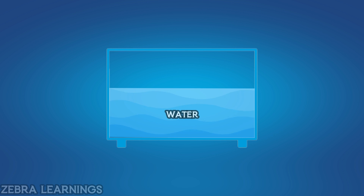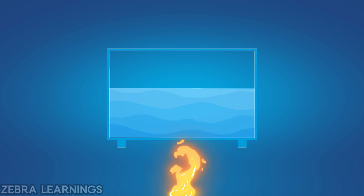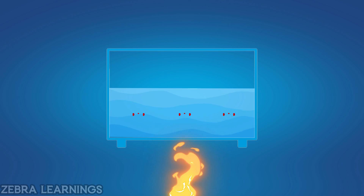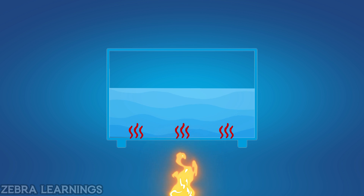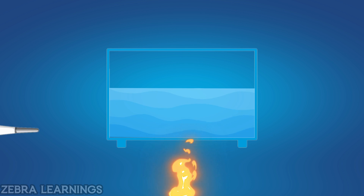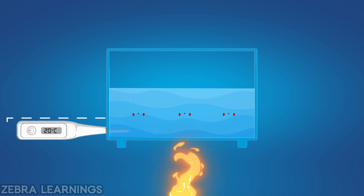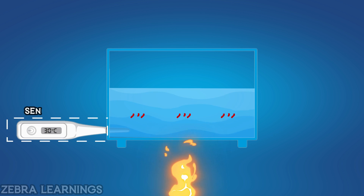We can take water in a completely closed container. Now we can heat this container. The heat will be transferred to the water little by little. The transferred heat will cause the water temperature to increase. We can measure this with a thermometer. This measurable heat is called sensible heat.